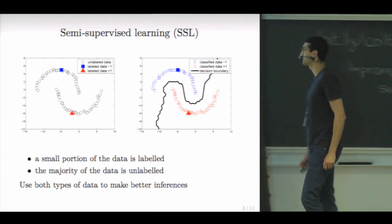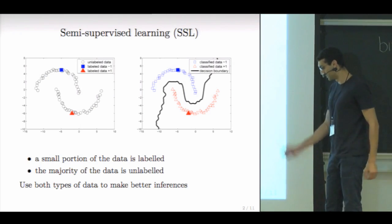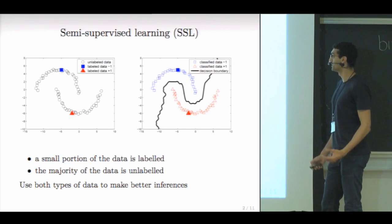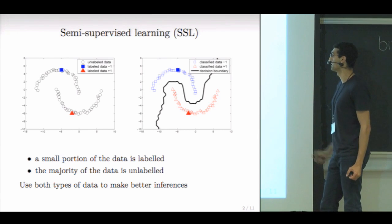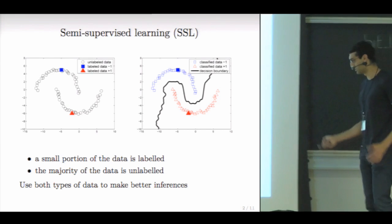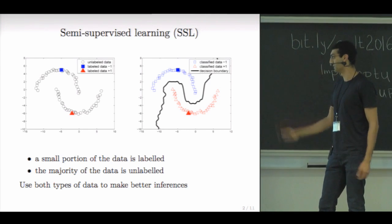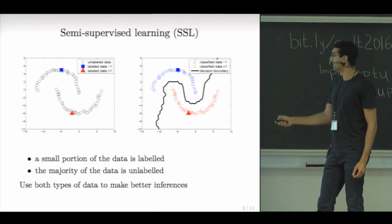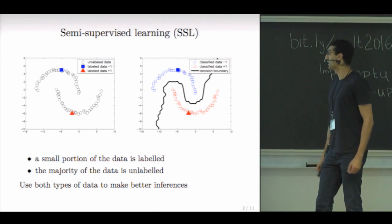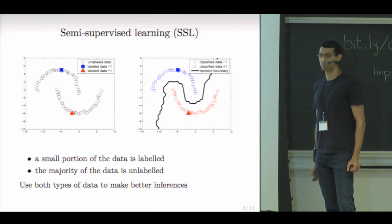So just a quick introduction to semi-supervised learning. We get data that is both - some of them are labeled. So we have an object, a label is associated to each object, plus or minus one, for example, in this setting. And we get a small portion of the data that is labeled and the majority is unlabeled. And we would like to use both types of the data to make better inferences. For example, using both these types of data, we can output a decision boundary that separates the positive class from the negative class.